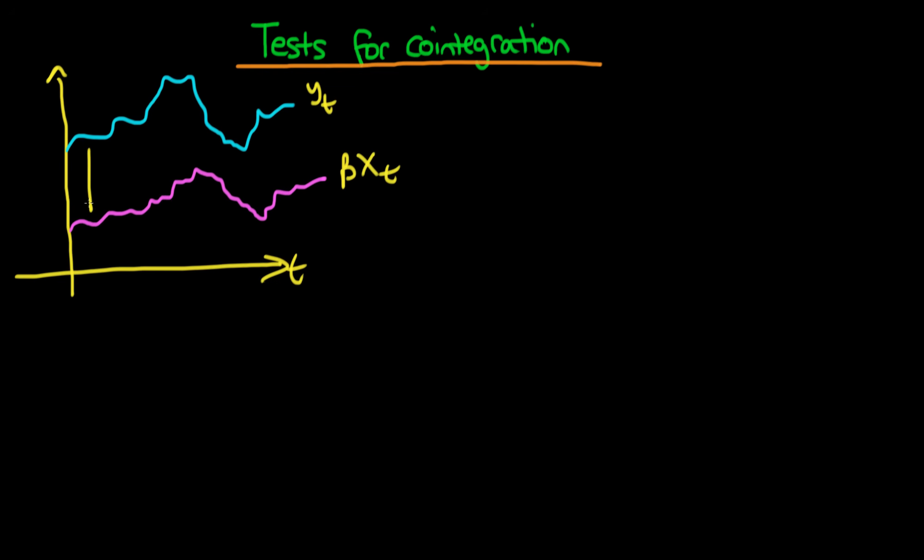So this top series here is Yt and this bottom series here is beta times Xt. And if it looks like the difference between the two series is relatively constant, or mathematically, the difference between the two series is stationary, then we might be able to conclude that we have some sort of meaningful relationship or some sort of economic relationship between Y and X.